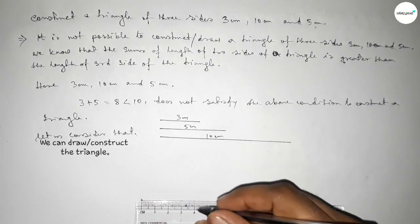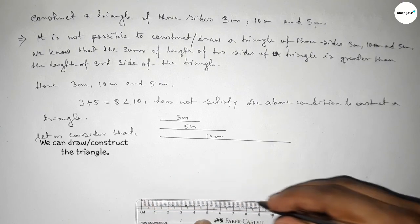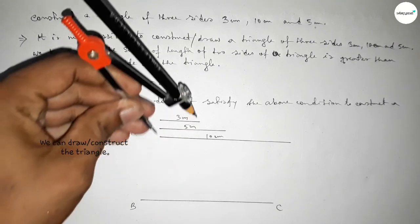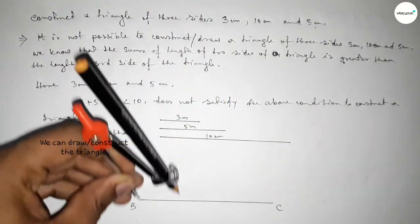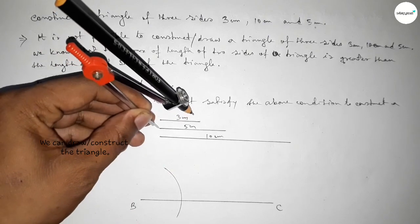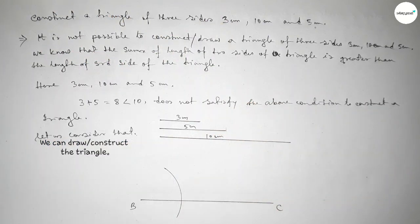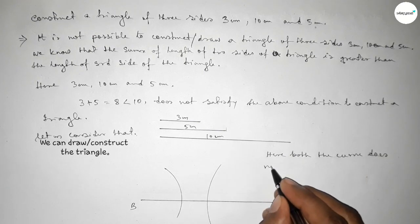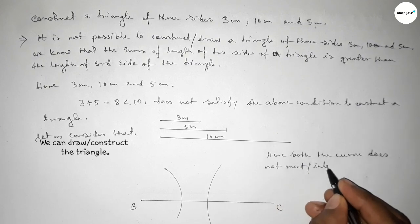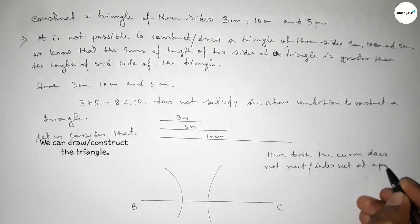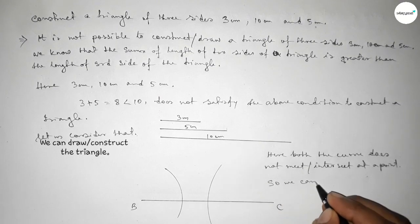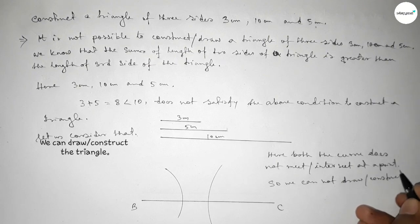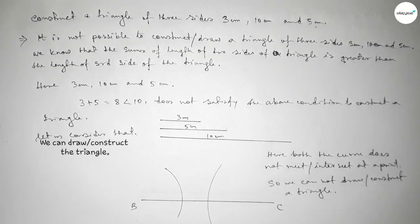Drawing a line of length 10 centimeter, taking point B and point C. Taking the length 3 centimeter with the compass and placing it on one end, drawing an arc. Then taking the length 5 centimeter, placing the compass on point C, and drawing an arc. We can see that both curves do not meet or intersect at a point, so we cannot construct a triangle with sides 3 centimeter, 10 centimeter, and 5 centimeter. That's all, thanks.